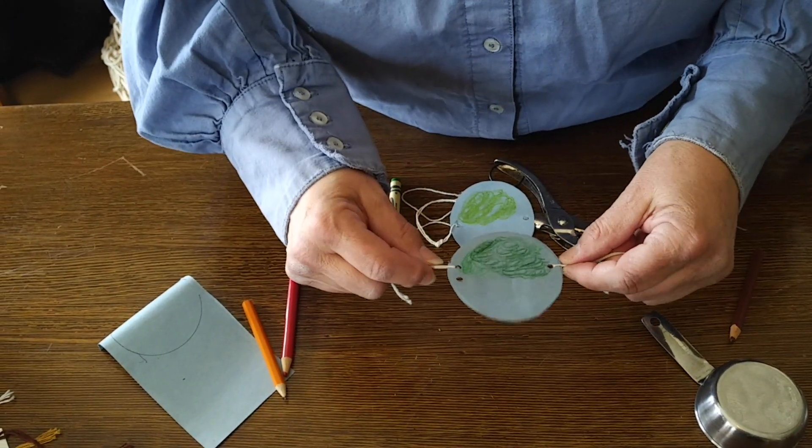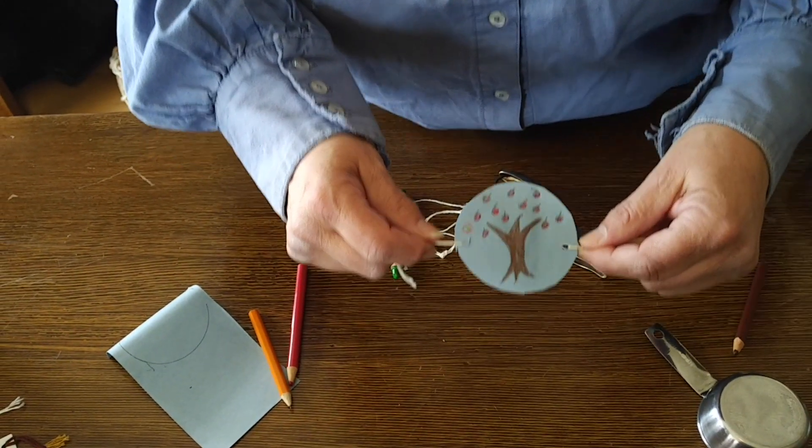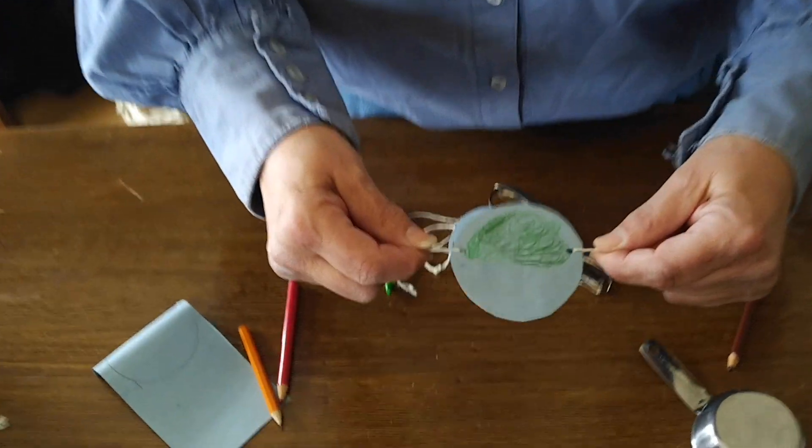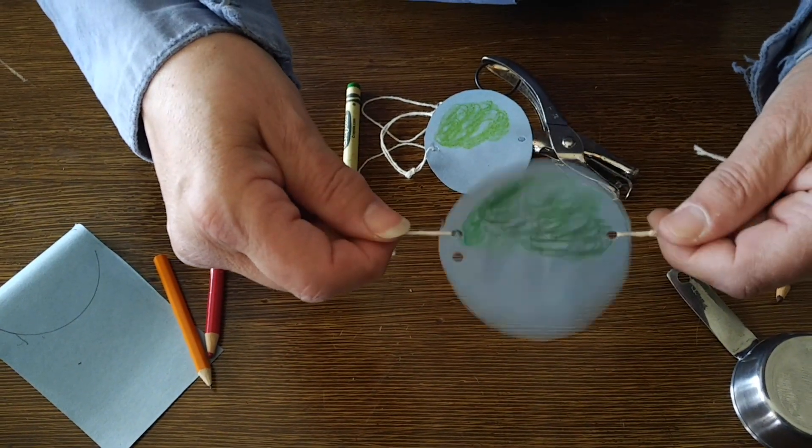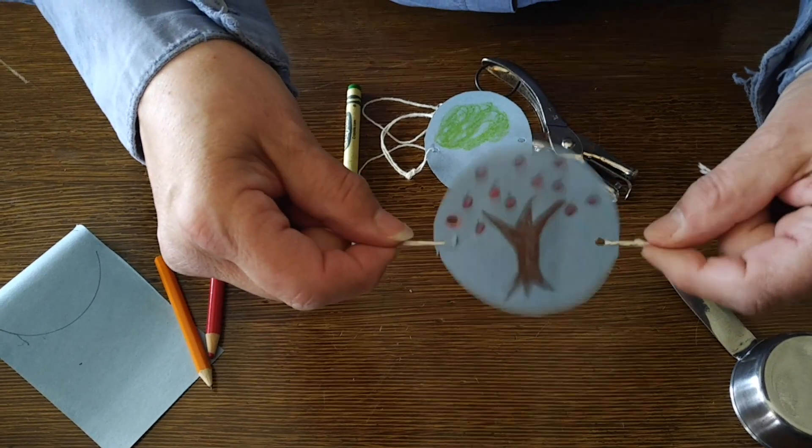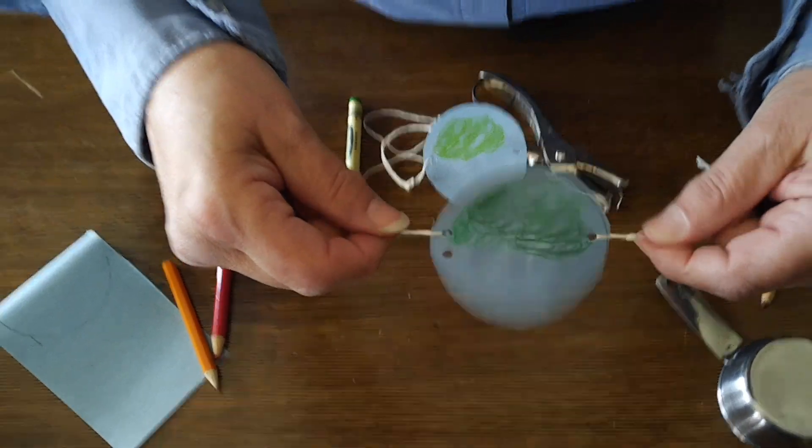You can see I made a mistake there. That's okay. And then when I twirl it between my fingers it's going to look like the tree has apples on it. It's as simple as that to make a thaumatrope.